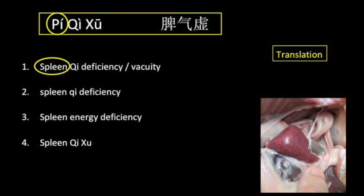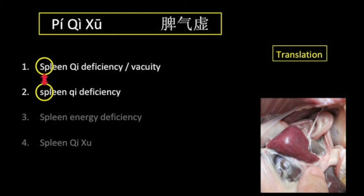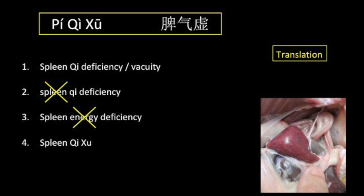The problem lies in the explanation of its physiology. One way used to differentiate between the TCM spleen and the anatomical spleen is by capitalizing the TCM term. Although this highlights the differentiation, the word remains the same, and this highlighting is only noticeable in the written form. This advantage disappears in any spoken conversation a TCM practitioner may have with a patient or a lay person.